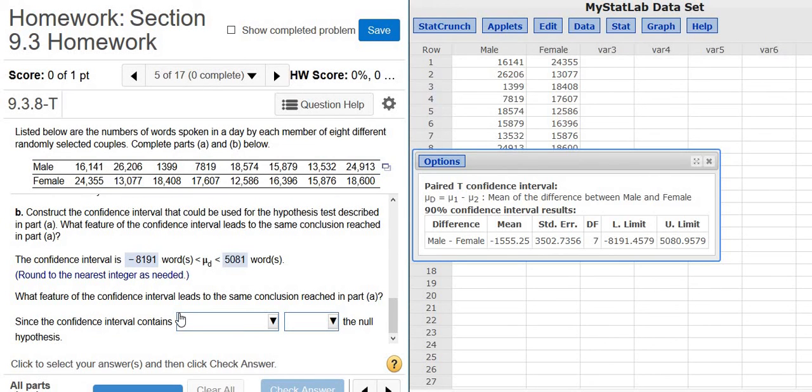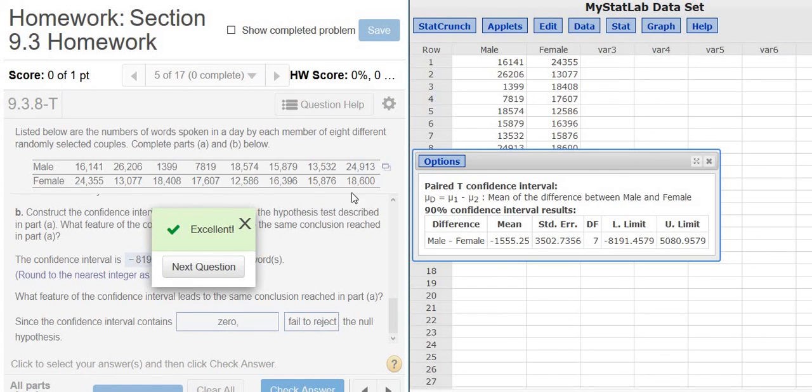And it says, what feature of the confidence interval leads to the same conclusion reached in part A? Well, the confidence interval contains 0. So in this case, we can't say that the means are different. So since it contains 0, we fail to reject the null hypothesis. So kind of a tough question. I didn't expect it to be that hard. I kind of rushed through it. Hopefully that made sense. That's it.